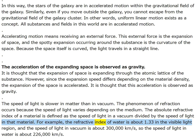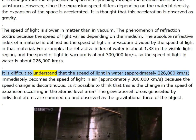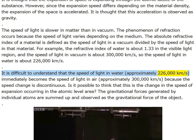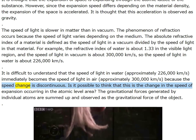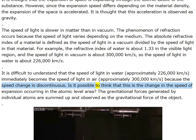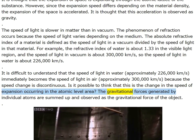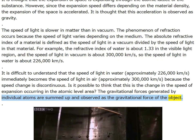It is difficult to understand that the speed of light in water (approximately 226,000 km/s) immediately becomes the speed of light in air (approximately 300,000 km/s) because the speed change is discontinuous. Is it possible to think that this is the change in expansion speed occurring at the atomic level? The gravitational forces generated by individual atoms are summed and observed as the gravitational force of the object. Gravity is the acceleration acting on space.